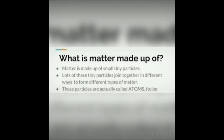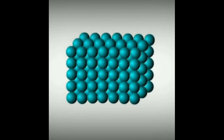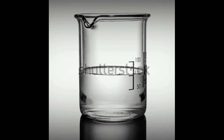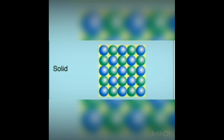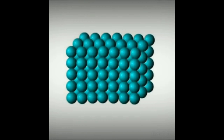Matter is made up of very tiny particles. Particles in solids are tightly packed with less space between them. To demonstrate this, take a measured beaker, fill it with water, and mark the water level. Add some salt and stir thoroughly — observe the level. The level of water remains the same because the solid salt particles enter into the spaces between the liquid particles on dissolving.